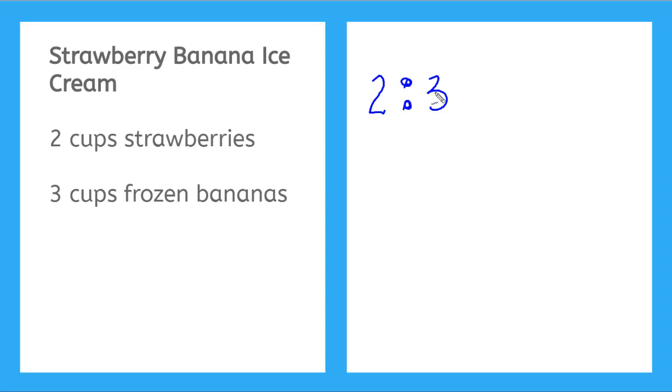We can write the rate of strawberries to bananas as two cups over three cups. But remember, with the same units, we can write this rate without units and it's just two over three.